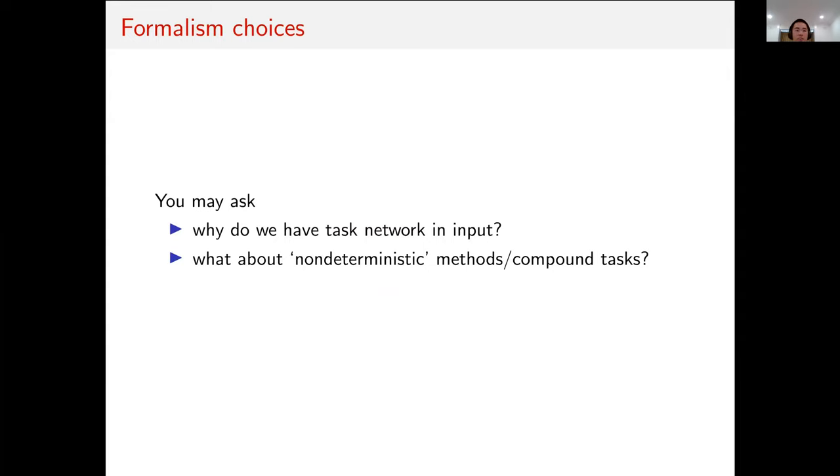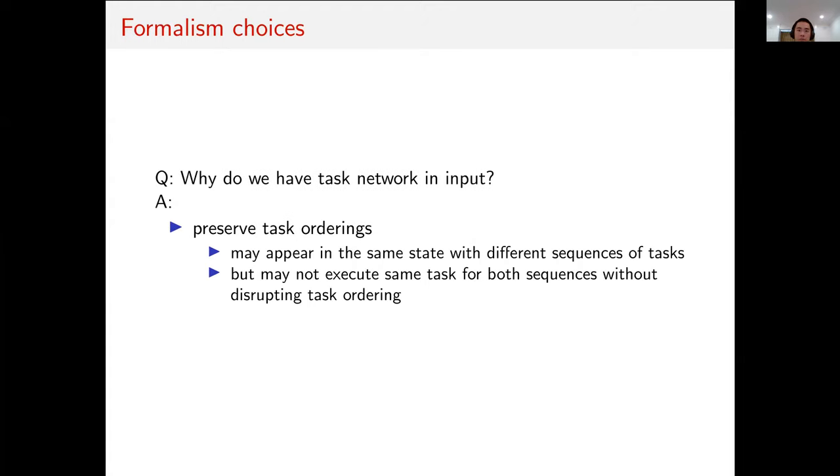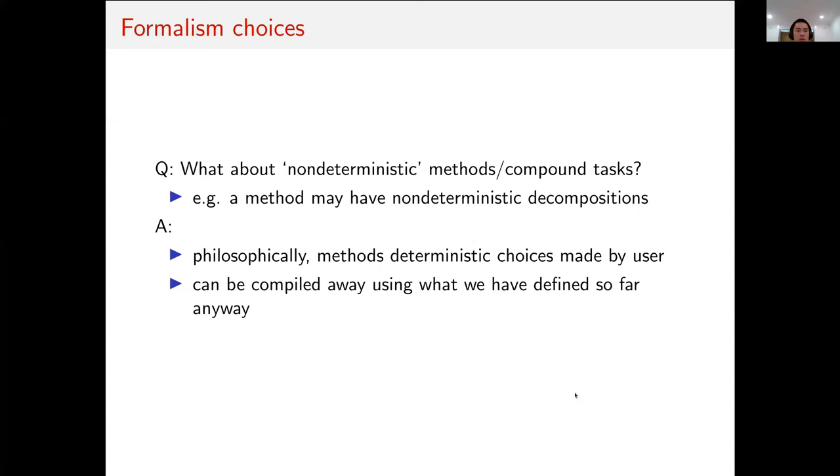Some questions about our formalism that I've been asked before, and you may have right now, are the following. The first is, why do we have the task network in the input? The main reason for this is that we may appear in the same state for different task networks if we view execution as progressing a task network. However, we may need to execute different instructions for the different task networks. For example, one task network may need to execute one task, but the second task network may not even have this task for the same state.